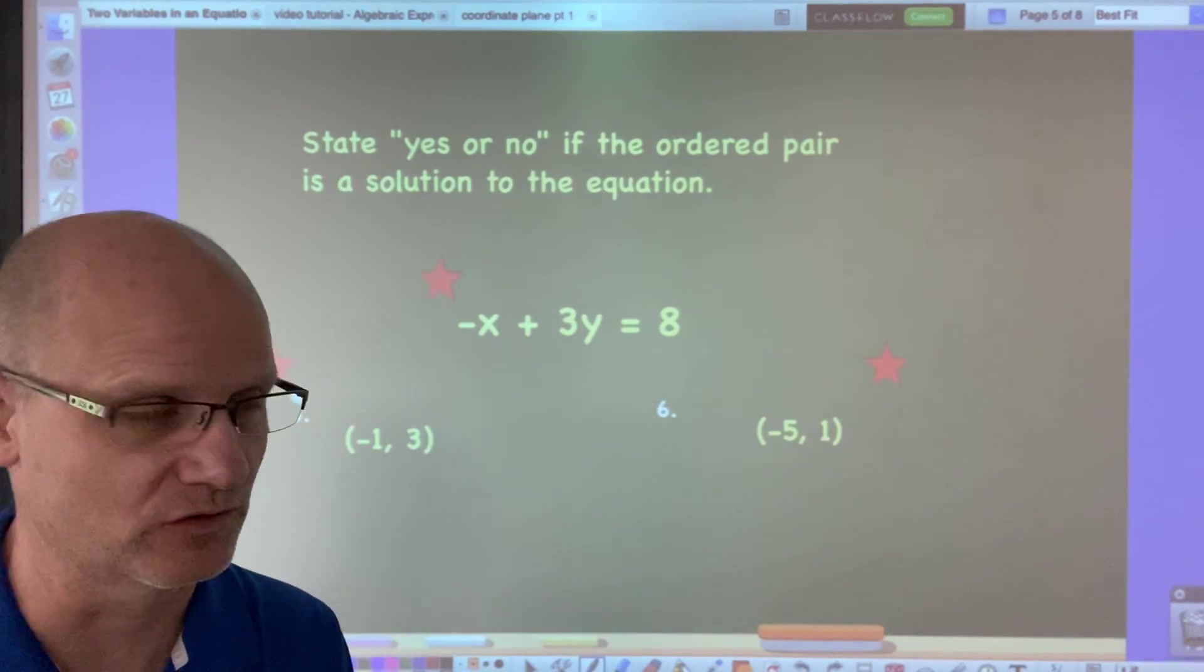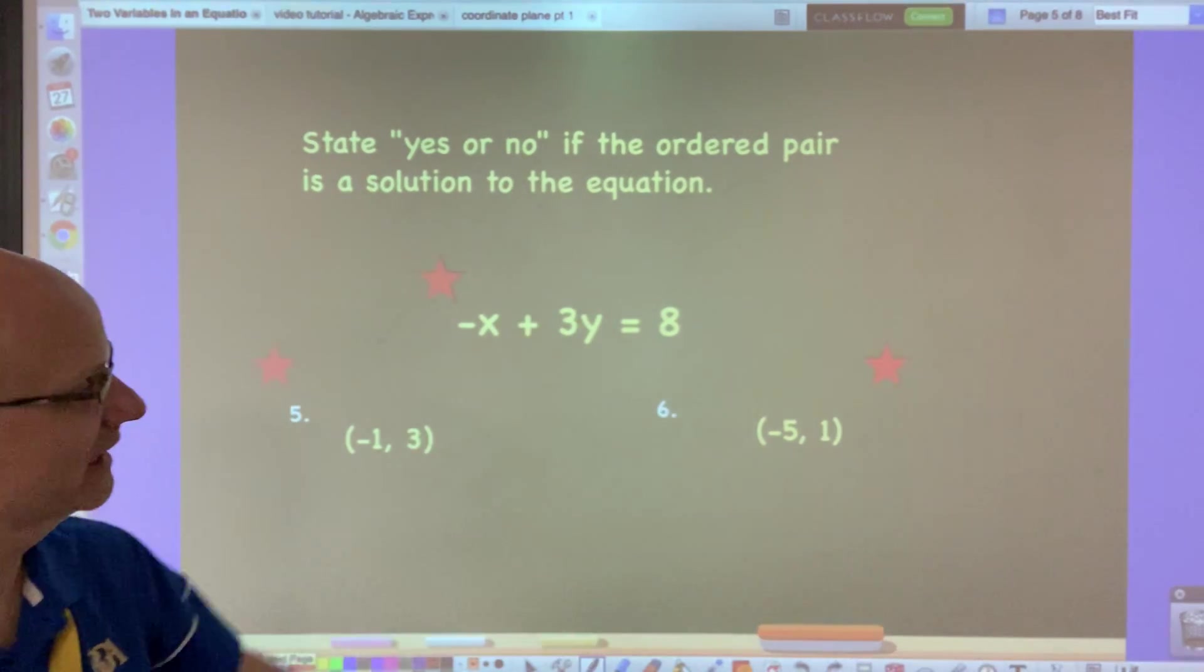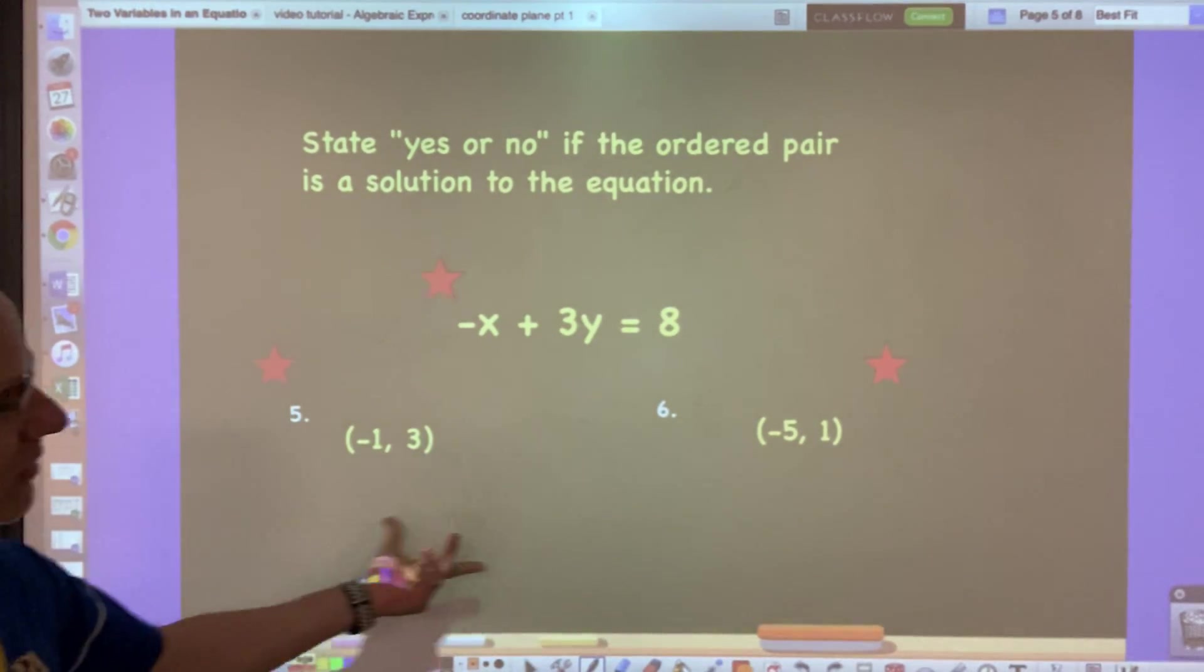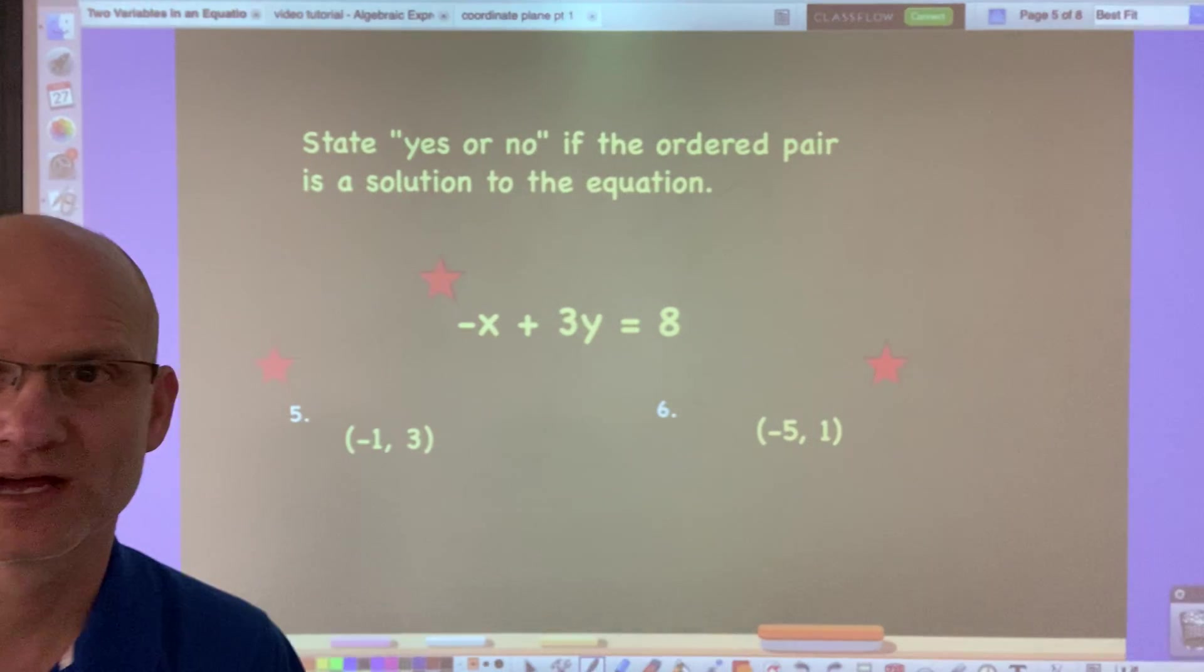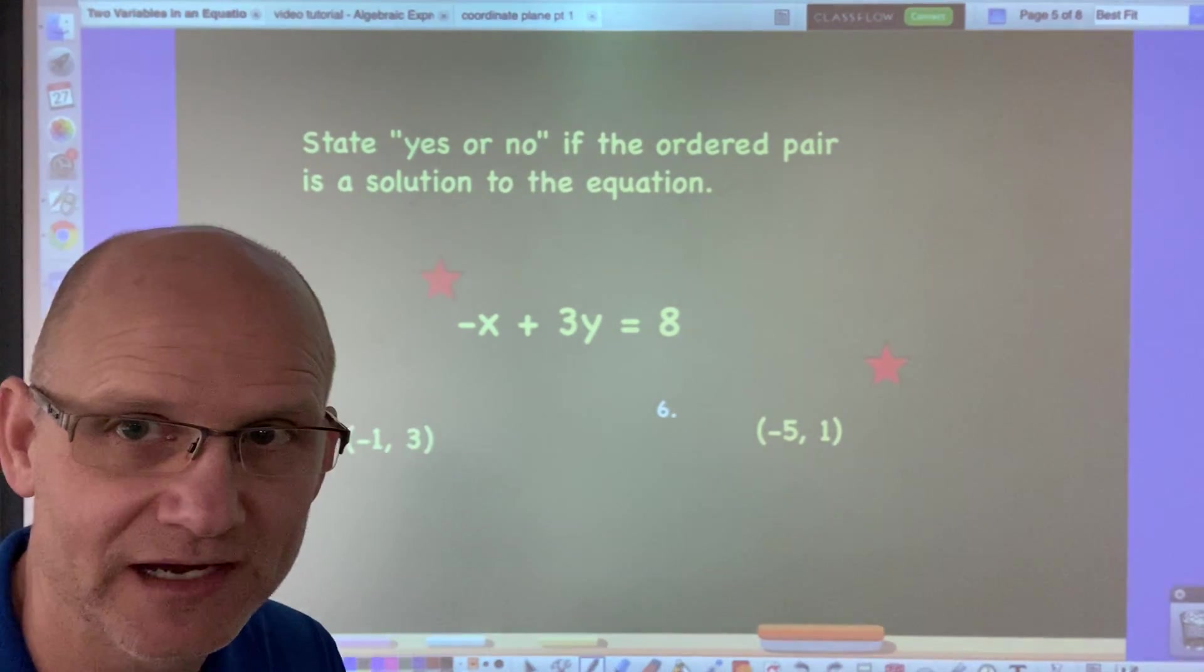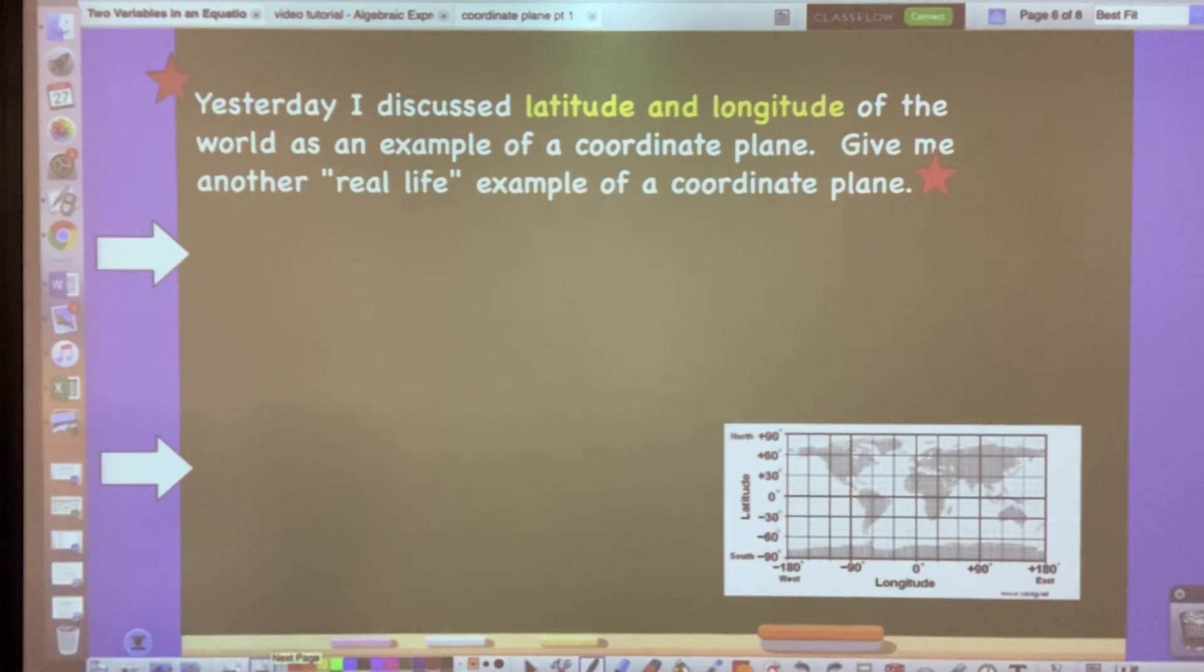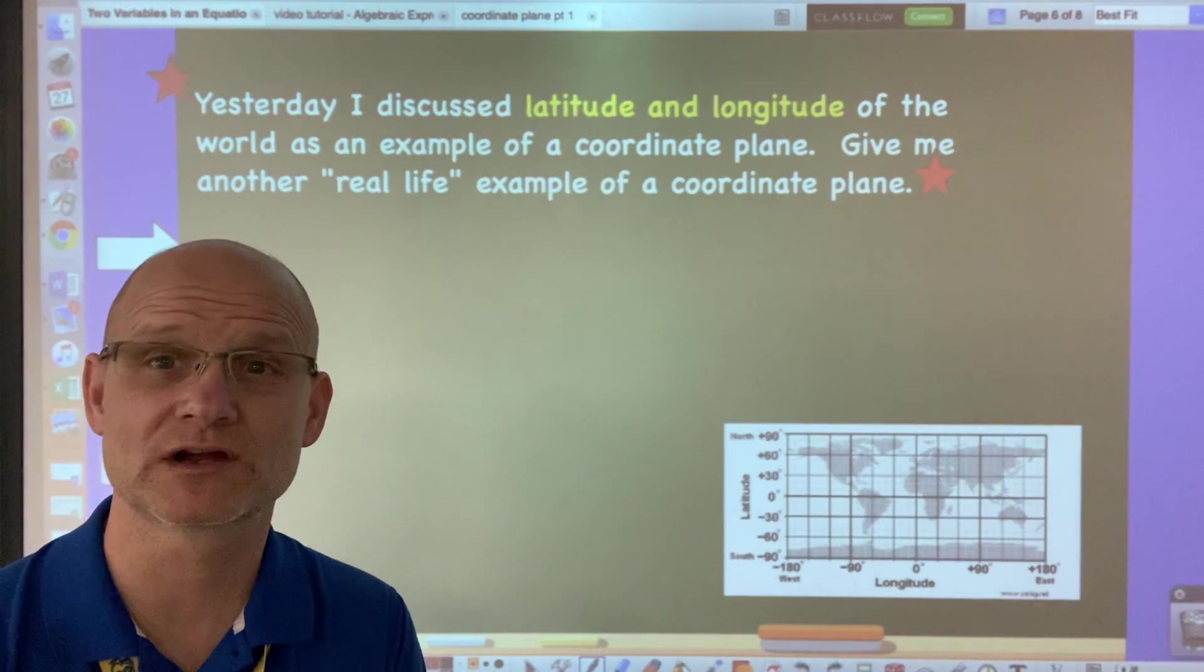And then for the last two set of questions for this particular type of problem. Here's the next equation: -x + 3y = 8. Again, plug in these ordered pairs, state if they are correct or not. You could just say yes or no. And then the last thing I want you to do is yesterday or whenever you're watching...